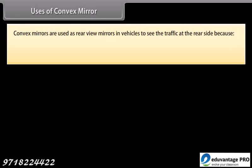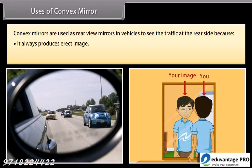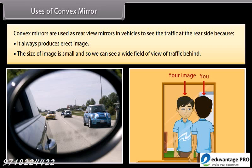Uses of convex mirror: convex mirrors are used as rear-view mirrors in vehicles to see the traffic at the rear side, because they always produce an erect image, the size of the image is small, and so we can see a wide field of view of traffic behind.